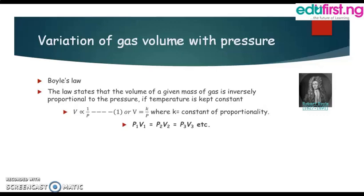Mathematically, volume V is inversely proportional to pressure P, which is why we have V = k/P, where k is the constant of proportionality. From this we can derive for different stages: P₁V₁ = P₂V₂, and so on up to PₙVₙ.